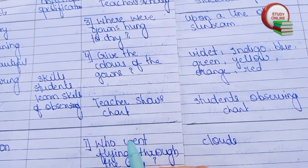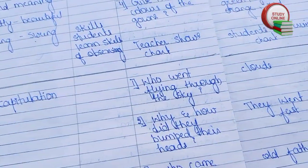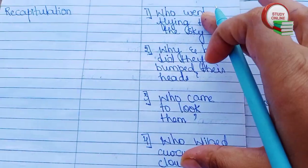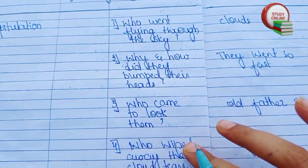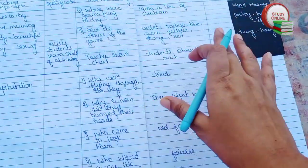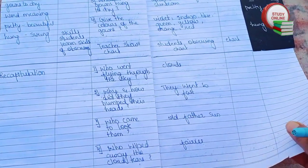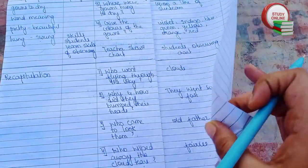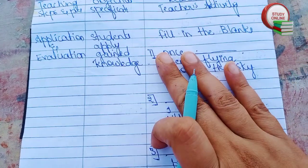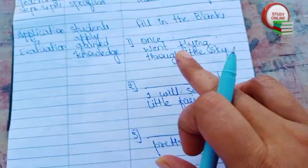The teacher shows the chart and students observe it — for teaching aids we write 'chart.' Here is the recapitulation part; I have added four questions with their answers. This is the overall look of our recapitulation part. Now let's turn the page to the last page of our lesson plan.